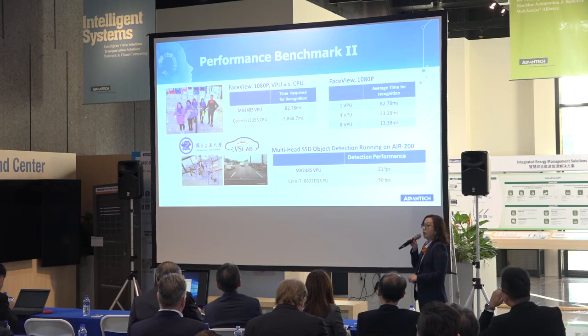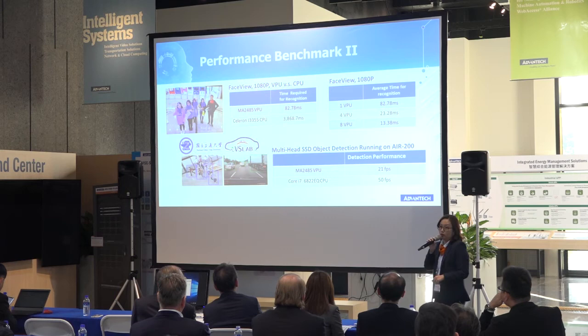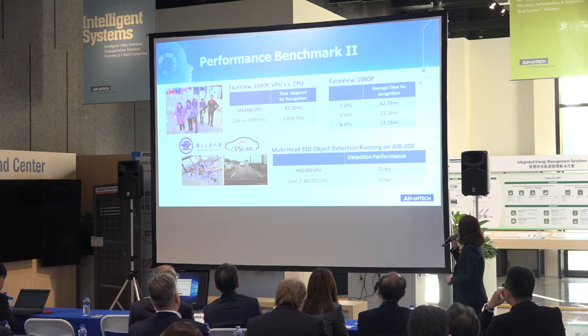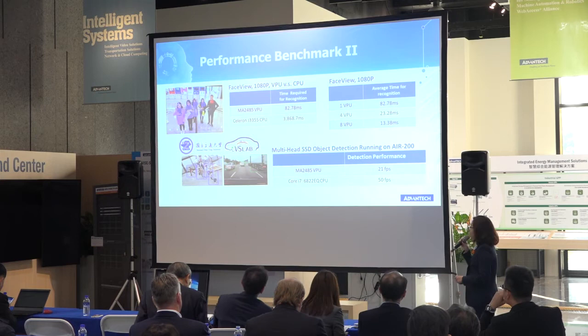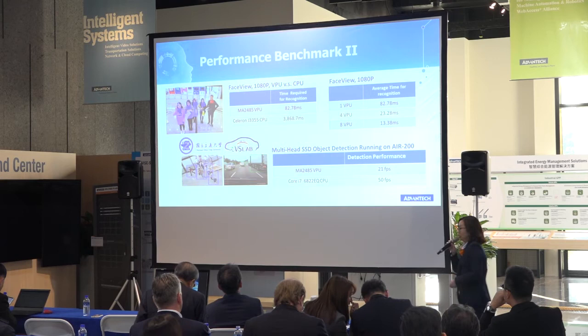There is also a live demo we have out there. This is from NCTU University — they're doing an autonomous driving AI solution. They're running on a Celeron processor, getting a result of 50 frames per second. But if we run this model on two Movidius VPUs, we get 21 frames per second. What I want to highlight is the performance is good, and also if you look at the price between these two solutions, you will see the advantage of the VPU.